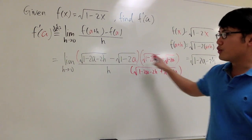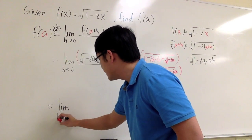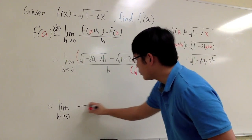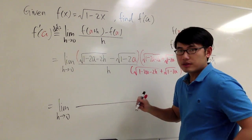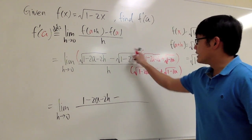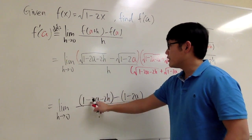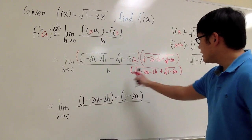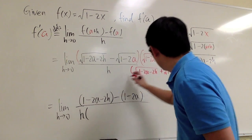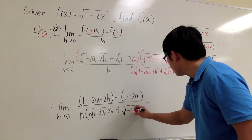The reason we multiply by the conjugate is to simplify the numerator. Writing the limit as h goes to 0: on the top, this is a minus b times a plus b, so all we need is a squared minus b squared — the square roots cancel out. We get 1 minus 2a minus 2h, minus the quantity 1 minus 2a. On the denominator, we keep h times the quantity square root of 1 minus 2a minus 2h, plus square root of 1 minus 2a.